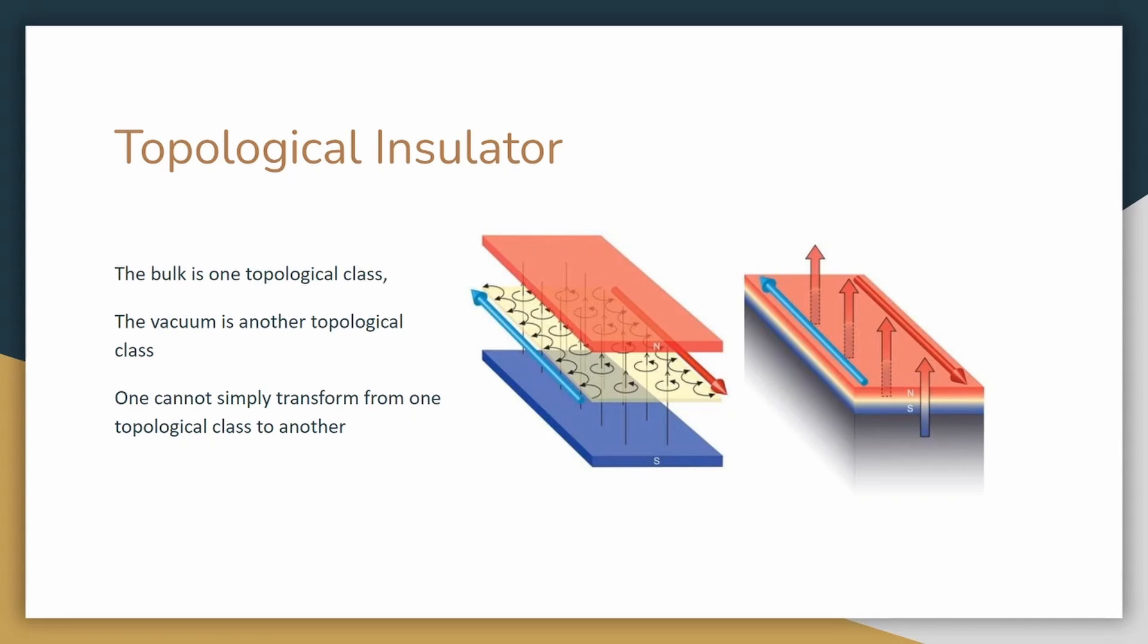The conduction along the edge is a physical representation of the electrons having to transform from one topological class to another. The electrons need to change from the energy state of an insulator to the energy state of a vacuum. The electron closes this gap at the boundary by forming a metallic edge.